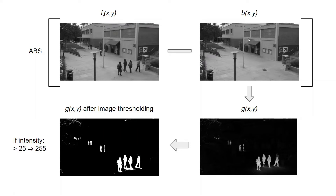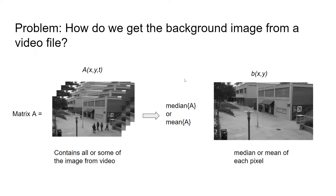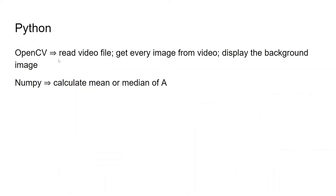Now the question is: how do we create or get the background image from a video file? We can use an arithmetic image processing method. First, we create a matrix that contains all or some images from the video, then we calculate the median or mean value of matrix A. In Python, we can use the OpenCV library to read the video file and get images from the video, and we can use the NumPy library to calculate the median or mean of matrix A.